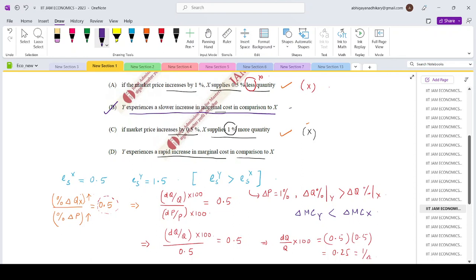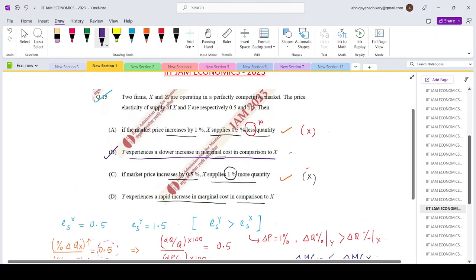So that is given by option number B. Y experiences a slower increase in marginal cost in comparison to X. It will increase but the speed at which it will increase is slower as a result of which the response to any price changes is higher. So that is why the correct option for question 15 will be option B. Thank you.